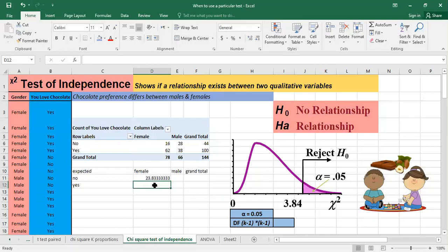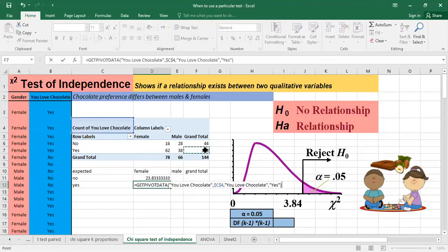Let's do it for females that they love chocolate. So it's the total of the row times the total of the column divided by the grand total.